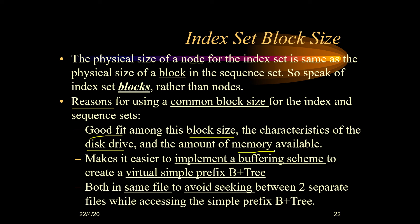The second reason for using a common block size is that for implementing a buffering scheme — like virtual buffering, a virtual symbol prefix B+ tree, or a virtual B tree — using a common block size for both the nodes and the blocks of the sequence set is beneficial. The third reason is that even with separate index set and sequence set, both are saved inside the same file, because having them in two separate files increases seek time. Saving them in the same file reduces seeking time.